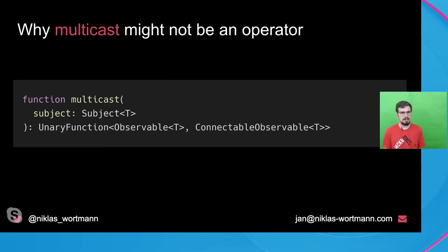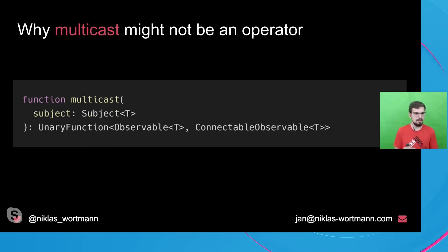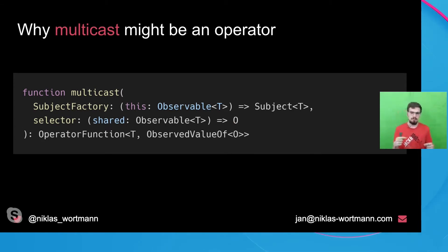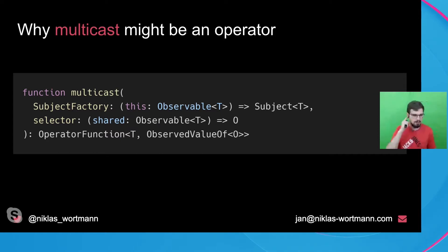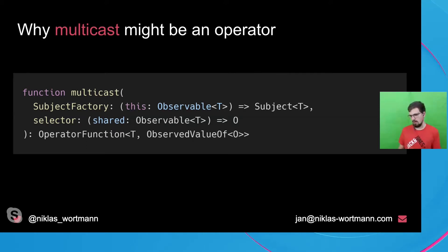Multicast is a little bit tricky. In some scenarios, multicast is not an operator. If you just pass a subject instance to multicast, you get back a connectable observable, which is not composable — you have to call connect on it and you can't pipe other operators to it. However, if you use the selector signature — where the selector is a function sharing the observable instance — then you get back an observable, and multicast can be considered an operator. This is one of the typing issues in RxJS that gets fixed in the next versions.